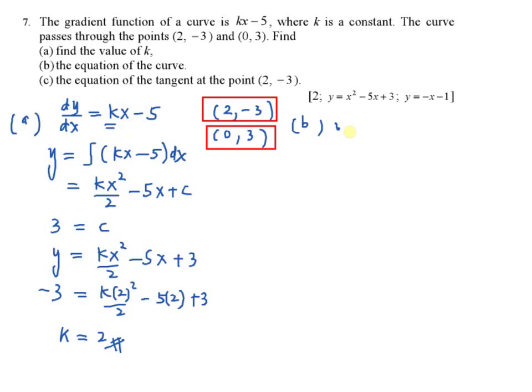So the equation of the curve, y equal to k is what? 2, 2x squared over 2 minus 5x plus 3. Simplify it. y equal to x squared minus 5x plus 3.